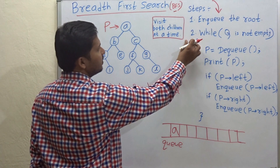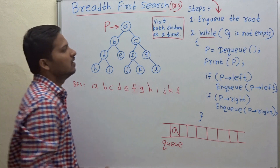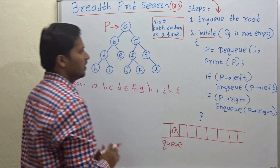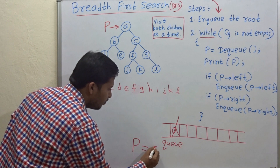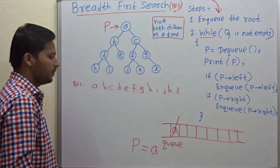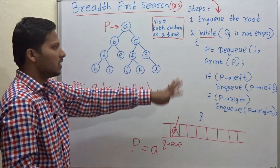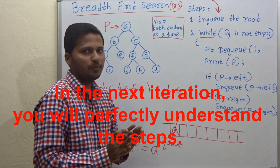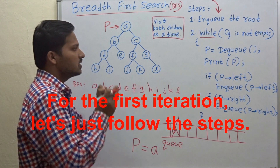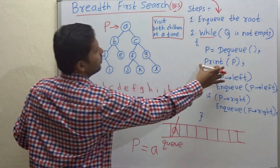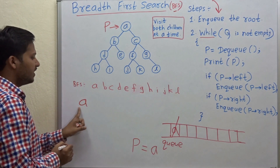The second step is a while loop: while the queue is not empty. The queue is not empty now, so we dequeue. We dequeue A and our variable P points to the dequeued element. So P points to A. Now print P — the data is A, so A is printed in the output.